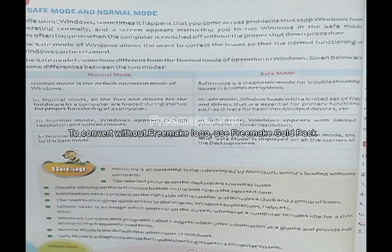We have come to the end of this chapter. I will be discussing the question and answer in the next class. We have learned what the Windows operating system is, what the different desktop elements are called, how to start computer programs, what is in the taskbar, and the different modes of computer operation including safe mode and normal mode. Please get ready — I will start with questions and answers in the next session.